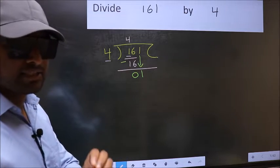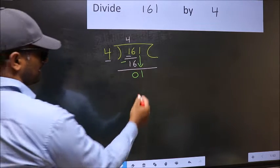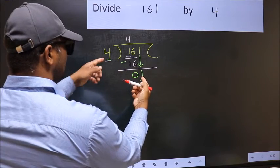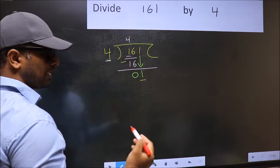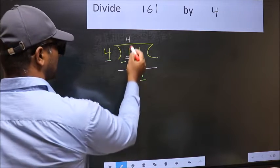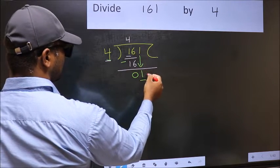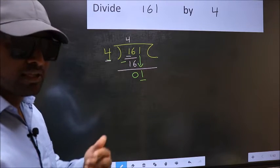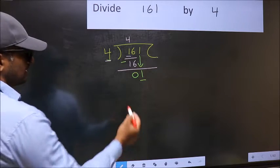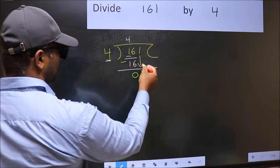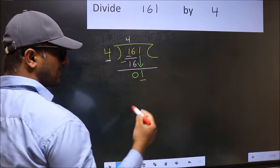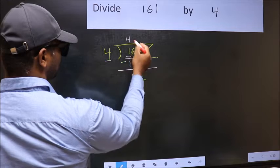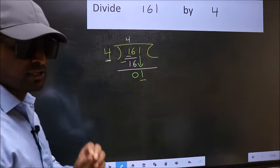And the mistake is this: here we have 1, and here 4. 1 is smaller than 4. So what many do is they directly put a dot and take 0, which is wrong. Why is it wrong? Because just now you brought this number down, and in the same step you want to put a dot and take 0. Which is wrong.